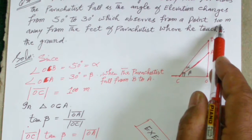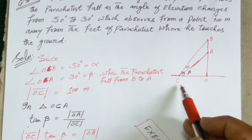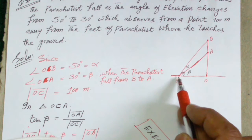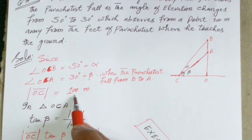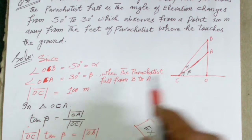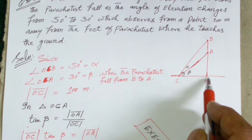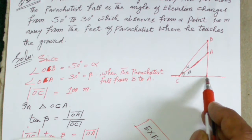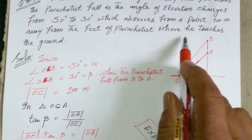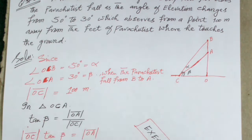This is observed from a point 100 meters away from the foot of the parachutist. OC is 100 meters from the foot of the parachutist, which is where the parachutist touches the ground.